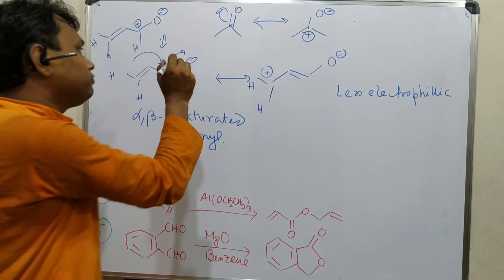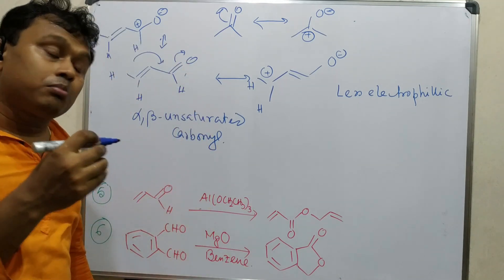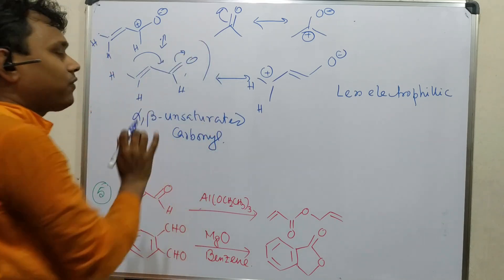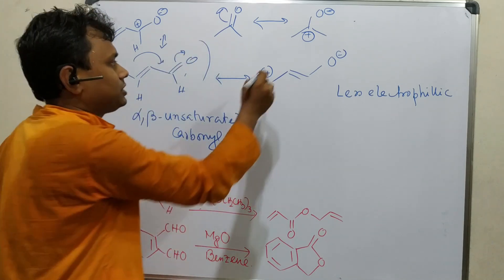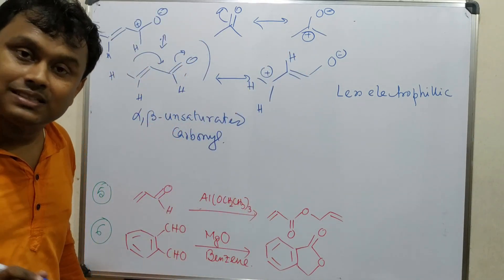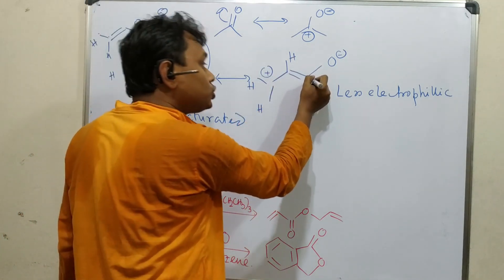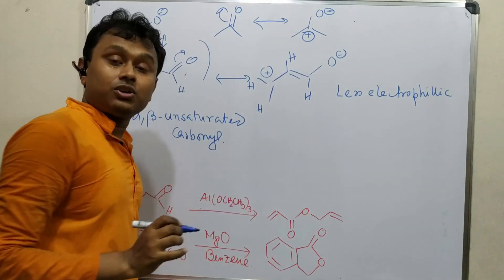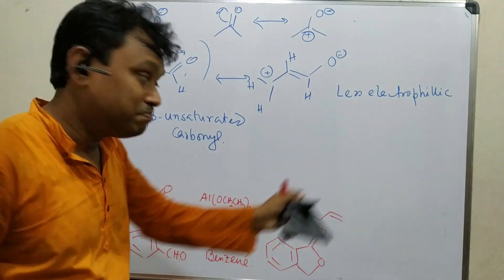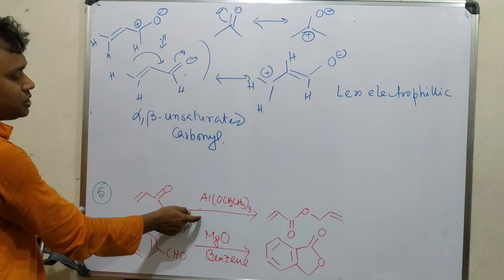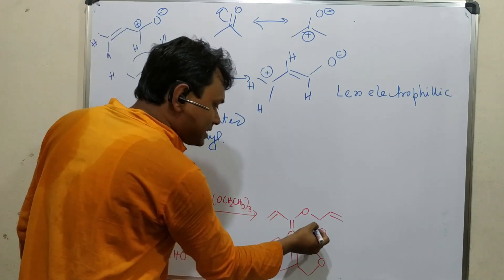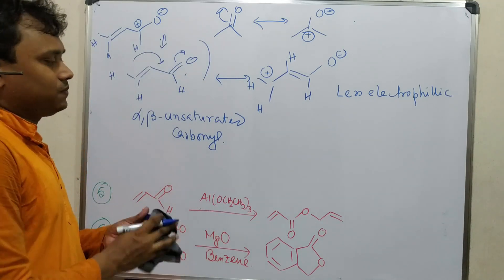That's why even in the Cannizzaro reaction — which requires no alpha hydrogen (and you could argue there is an alpha hydrogen here, but it is sp2, so it cannot be enolized) — this substrate should participate in the Cannizzaro reaction. But under normal conditions it does not, because of this reduced electrophilicity. However, the Tiszenko reaction is so efficient that this conversion can still be achieved under these conditions.